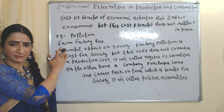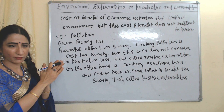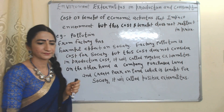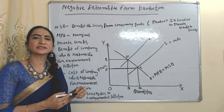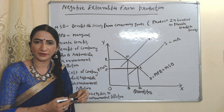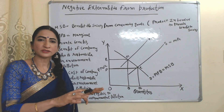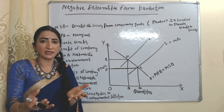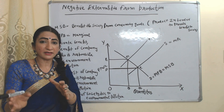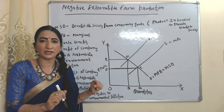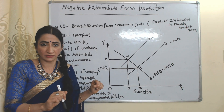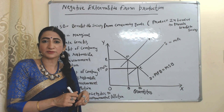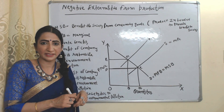So we can say that externality means the cost or benefit of economic activities that impact the environment. Now we will look at negative externalities from production. Suppose there is one factory which is polluting our air by releasing harmful chemicals. Obviously this is a cost for society, so it will be called negative externality.